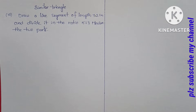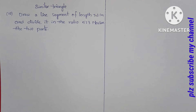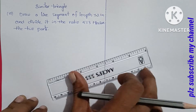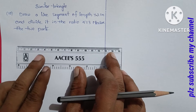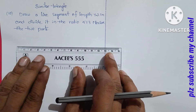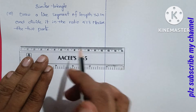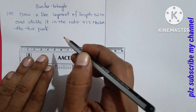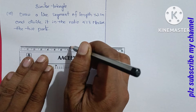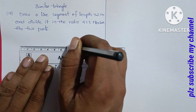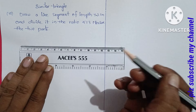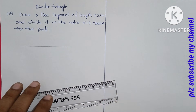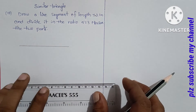If you look at this problem, first you can do it. Draw a 7.2 centimeter line segment. 7.2 centimeters — if you look at this size, it is perfect. 7.2 centimeters to draw.